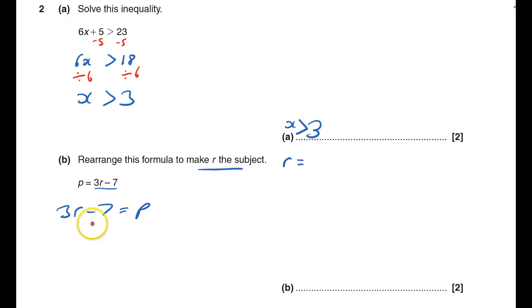on its own, so I need to get rid of the minus 7. So I'm going to add 7 to both sides. The nice thing about rearranging a formula: I don't actually have to work anything out because I can just write down p plus 7.